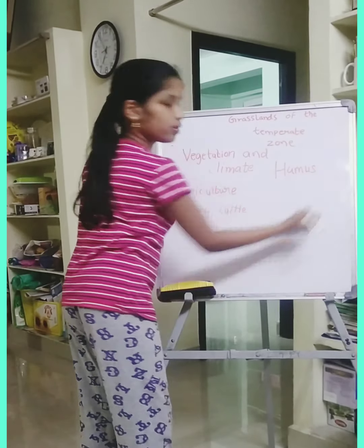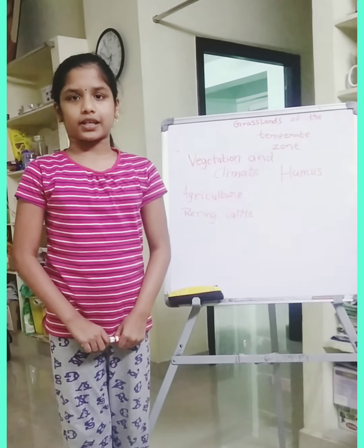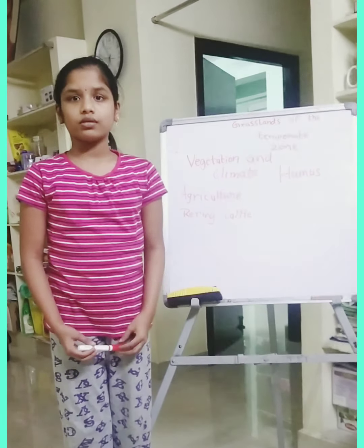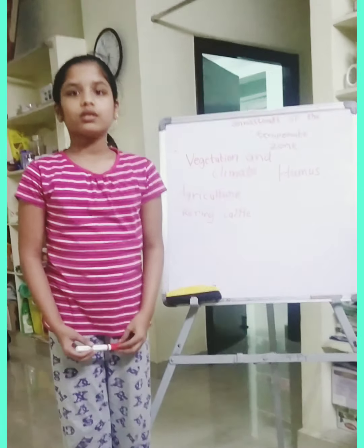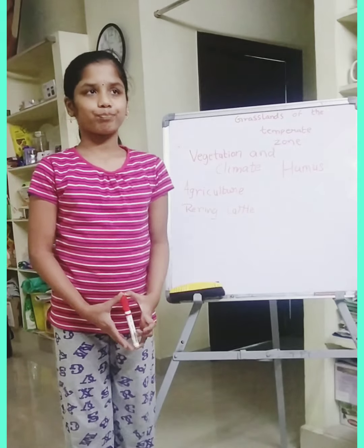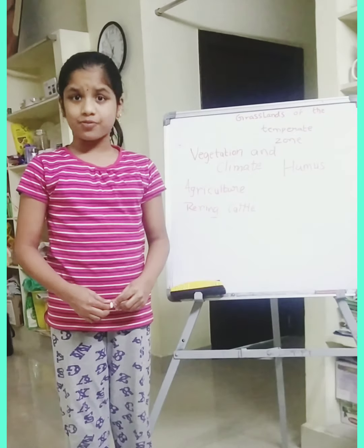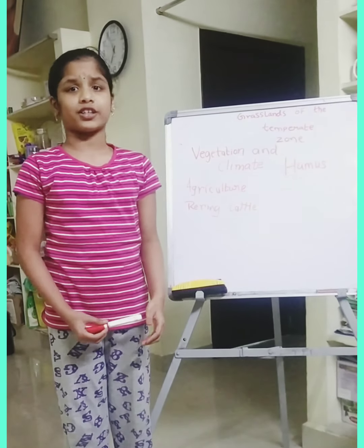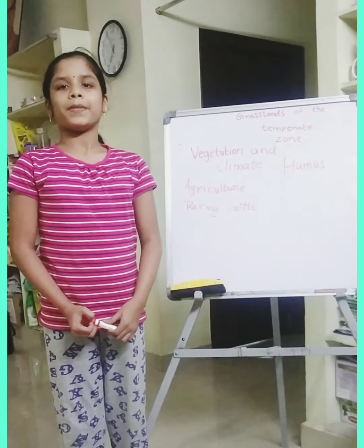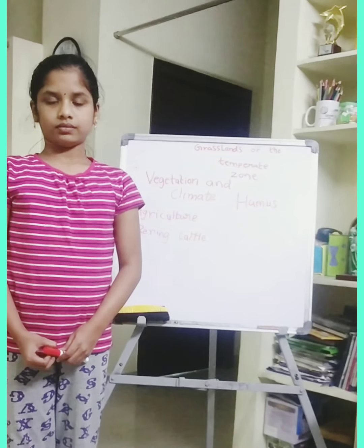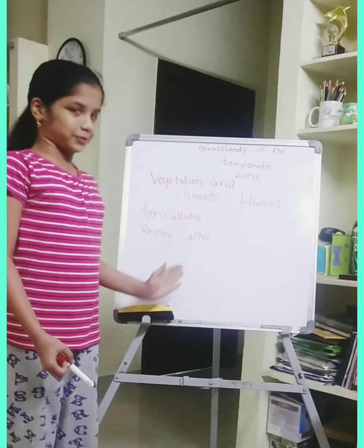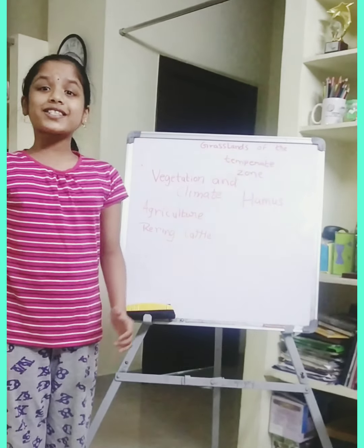Now we are going to go to agriculture. As I mentioned, the soil here is very fertile. There are two rivers, the Mississippi and Missouri, and their tributaries together make plenty available for agriculture. This region produces large quantities of wheat and is called the wheat basket of the world. Other major crops grown in this region include barley, oats, and so on.